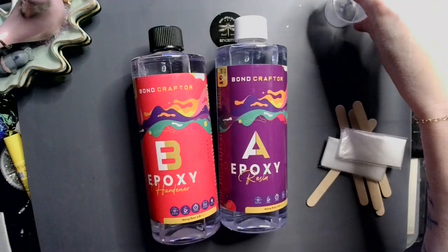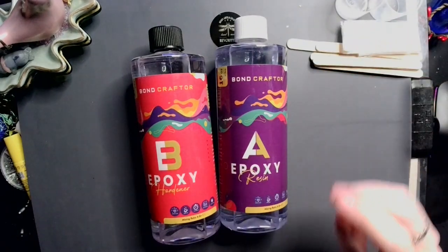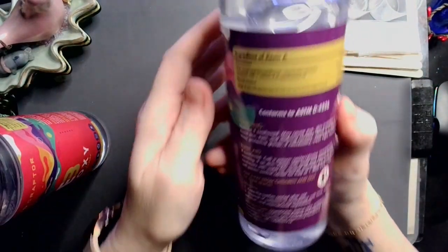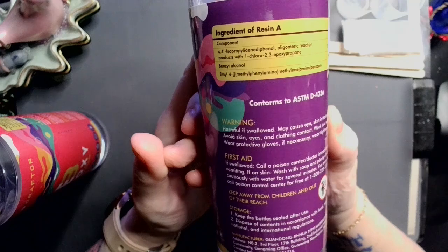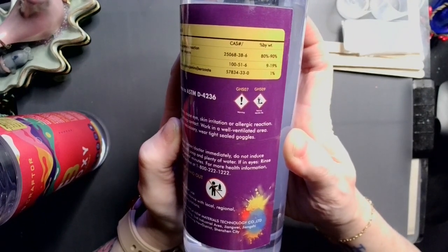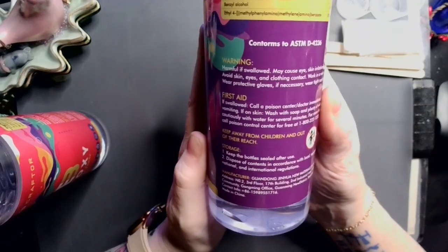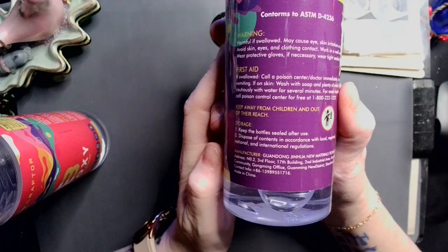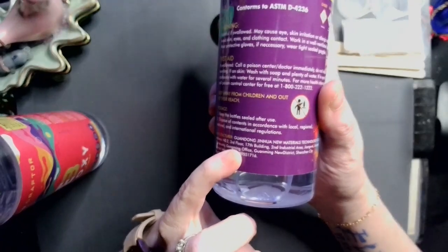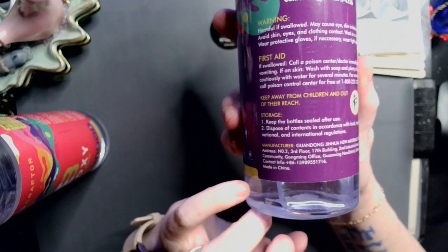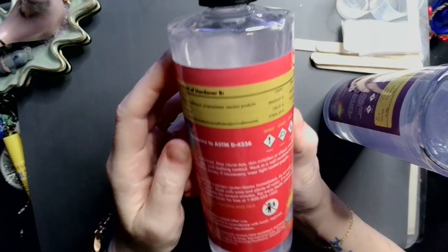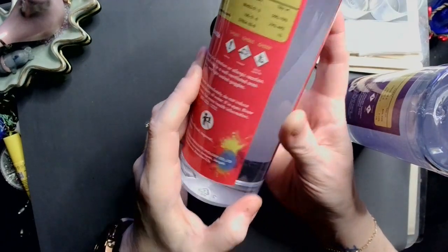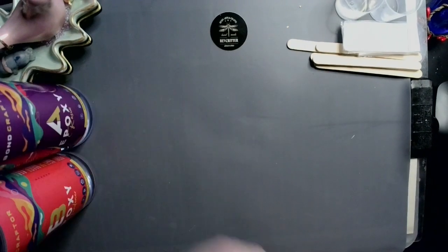Now, what it does not have in here is instructions, which is interesting to me. But let's take a look at our resin and see what it says. Now, the ones that they sent me, 16 ounces each. So let's see what it says on the back of the bottle. We've got our ingredient list and percentage. Standard warnings, first aid, keep bottles sealed, dispose of contents in accordance with governmental regulations, and manufacturer is something that I don't want to butcher. So I'm not even going to try. And on the back of B. Second verse, same as the first. Ingredients, warnings, first aid, storage.